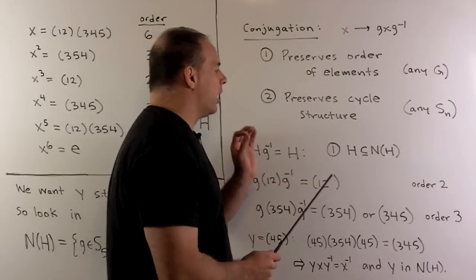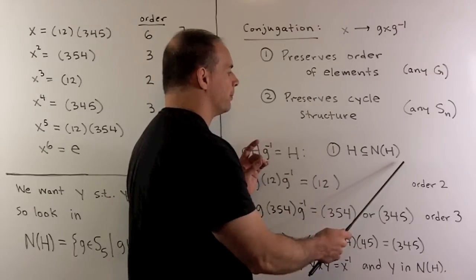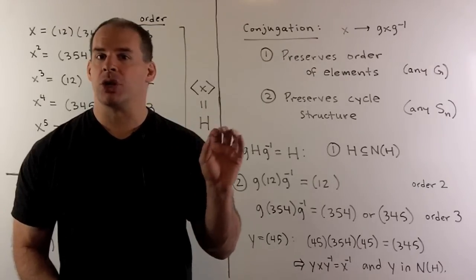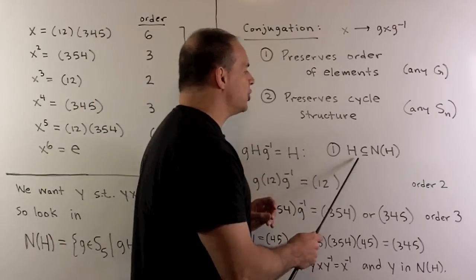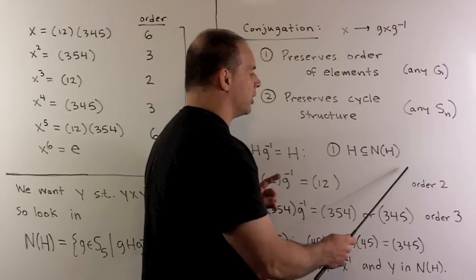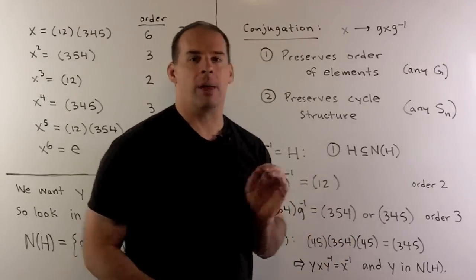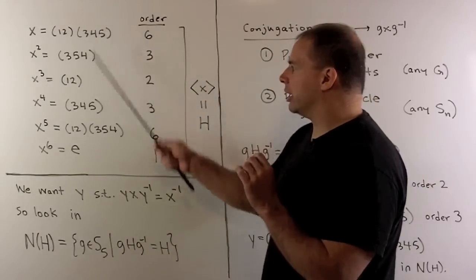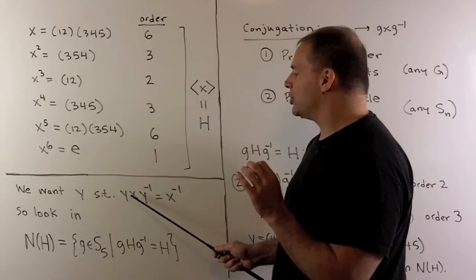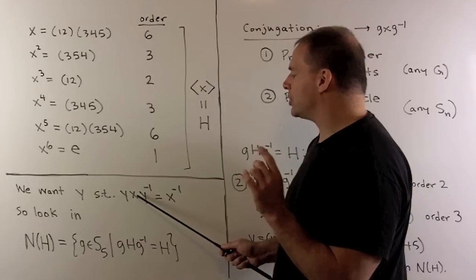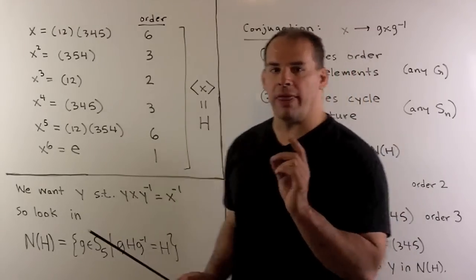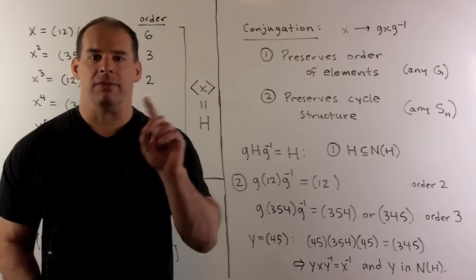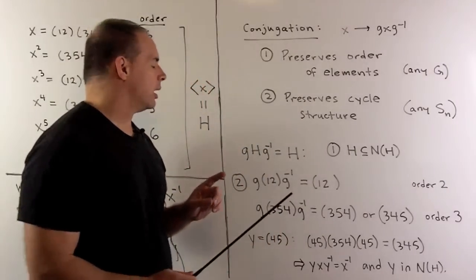Now, how do we get elements in the normalizer of H? First, we know because H is closed under multiplication, that means H is a subgroup of the normalizer of H. That's not going to help us find Y. Our subgroup H is abelian, so if Y was in H, the Y would pass through the X and then we just get X out for the answer here. So we don't want that. So we're going to need to look at Y outside of H.